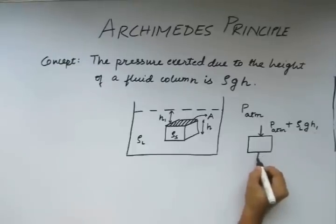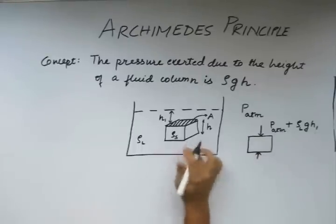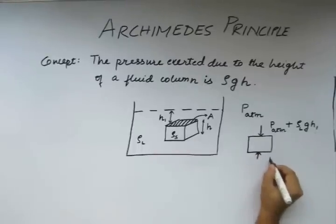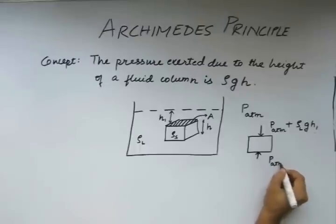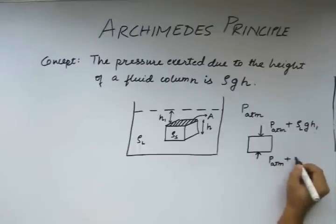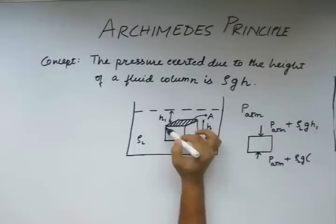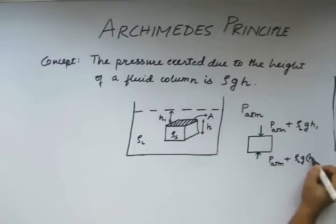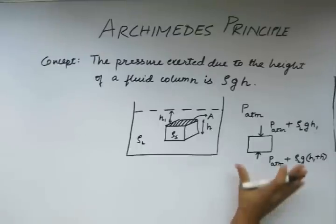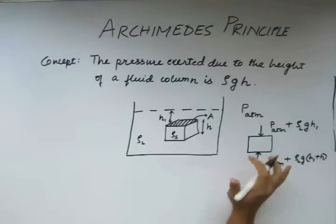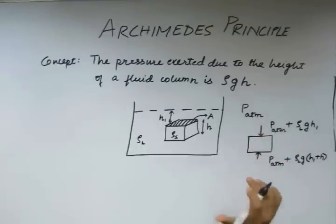The pressure applied by the fluid on this block at the bottom surface will be P atm again plus rho l into g into this height plus the height of the body. This is in general the pressure on the top and bottom parts of the body.